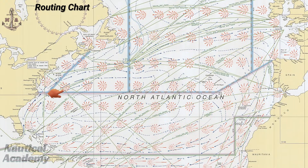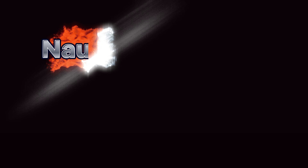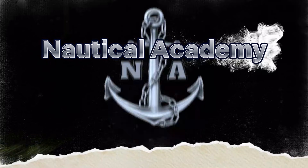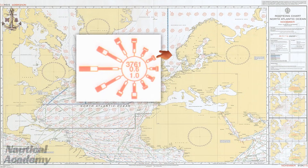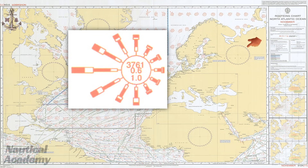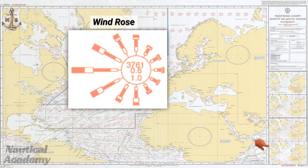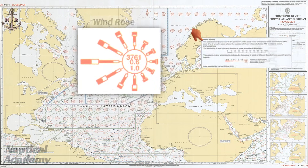In today's video, we will focus on one of the most important symbols found on the routing charts: the wind rose. This orange symbol looks like a small, circular diagram with several lines radiating outward, almost like a compass rose. On the right side of this routing chart, we can find the marginal information, which provides explanations for the wind roses, ocean currents, load line zones, shipping routes, and other important climatological notes that help navigators interpret the data correctly.